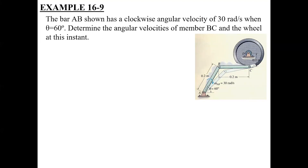In the examples we have seen so far — example 16-6, 16-8, and 16-9 — in 16-6 there were 3 links with 2 translations and 1 general plane motion. In 16-8 you have 3 links, 1 translation, 1 rotation, and 1 general plane motion. For example 16-9, you have 3 links, 2 rotations, and 1 general plane motion. So three different types of combinations were covered in these three examples.